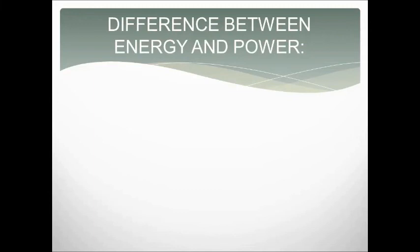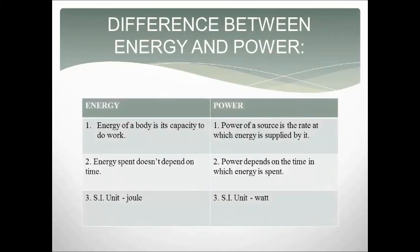Let us understand the difference between energy and power. The energy of a body is its capacity to do work, whereas the power of a source is the rate at which energy is supplied by it. Energy spent does not depend on time, but power depends on the time in which energy is spent. The SI unit of energy is Joule and the SI unit of power is Watt. Now we know what is work, power, and energy — all three are scalar quantities. Work depends on force applied and displacement. Power depends on work done and time taken. And energy is the capacity or ability to do work.